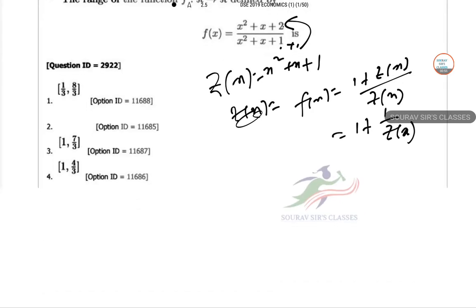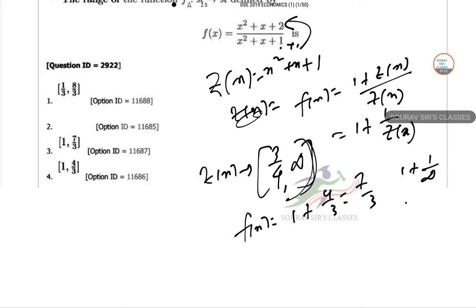The range of z(x) will be from 3/4 to infinity. Therefore, the maximum value of f(x) will be 1 + 4/3 = 7/3, and 1 + 1/infinity = 0, so that is 1. It lies between 7/3 and 1. So the answer is option C.